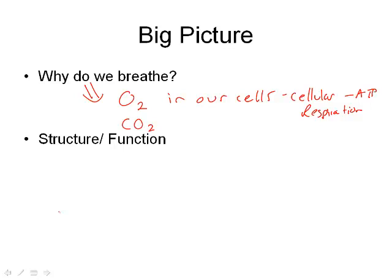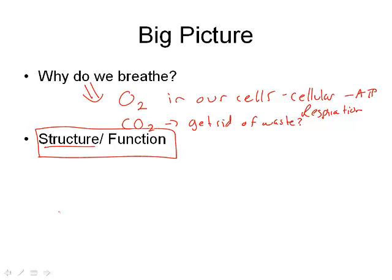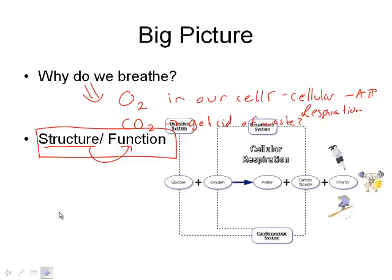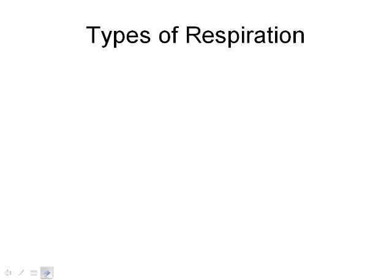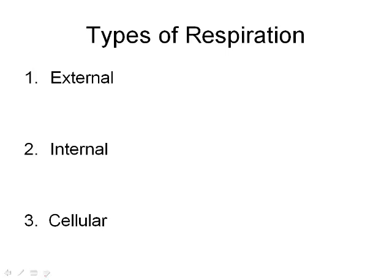A byproduct of cellular respiration is CO2, and we need to get rid of that waste. The point of breathing is gas exchange. The big picture is we're going to look at structure — what everything is made up of — and then what the functions are. We have a few different types of respiration: internal, external, and cellular respiration. Starting with cellular respiration — we have oxygen and glucose and they break down to CO2 and water, plus ATP.